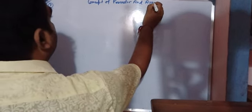Hello students. Today's video we are going to learn from mensuration — the chapter name is 'Concept of Perimeter and Area'. That is from page number 220 of RS Aggarwal.